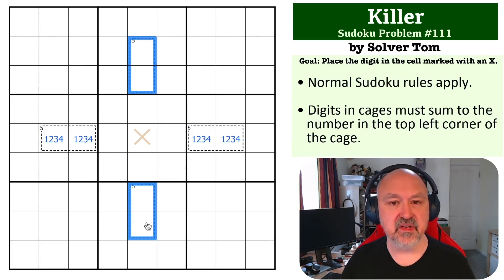In the 15 cage, there are only two ways to make 15 with sudoku digits: either 9-6 or 7-8. So these are going to be either 9-6 or 7-8.